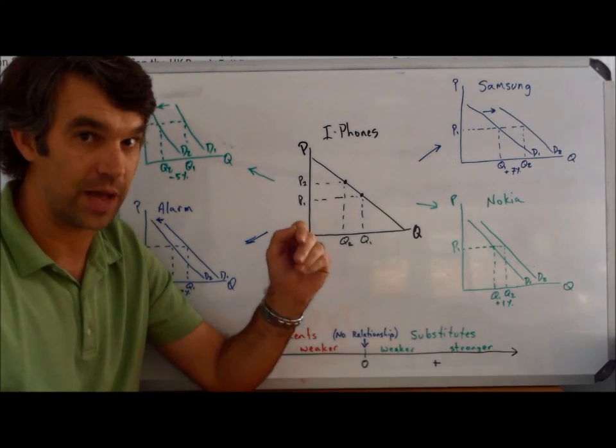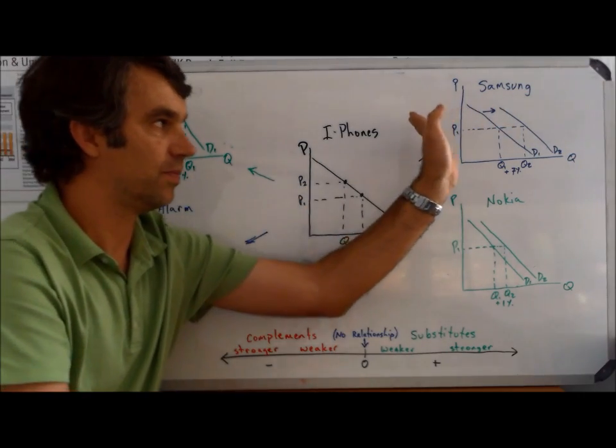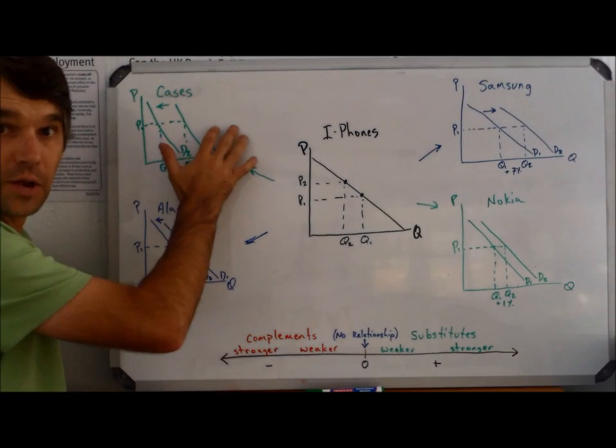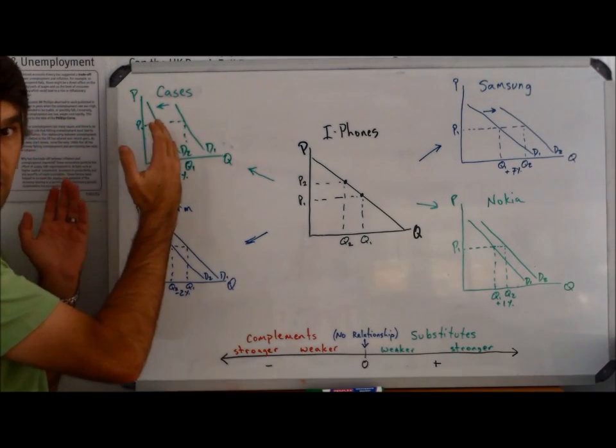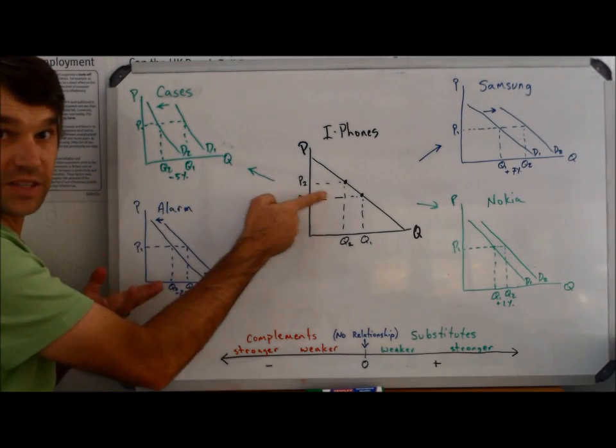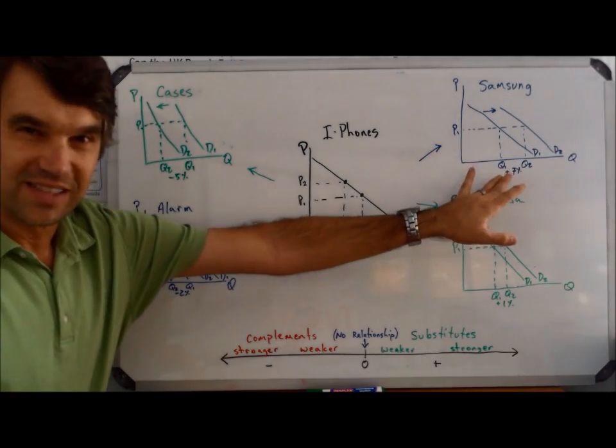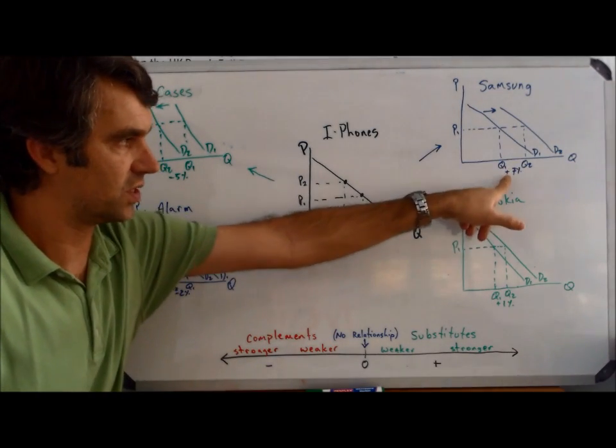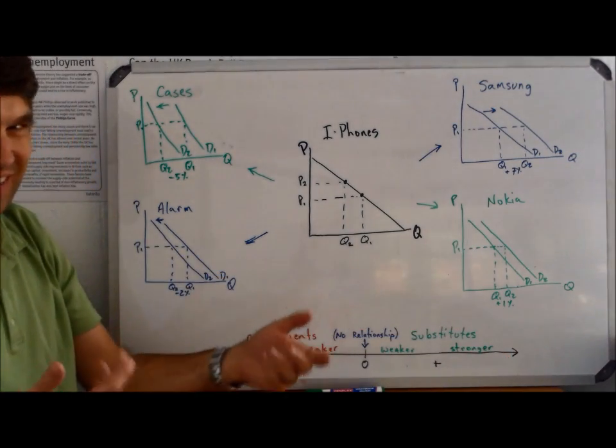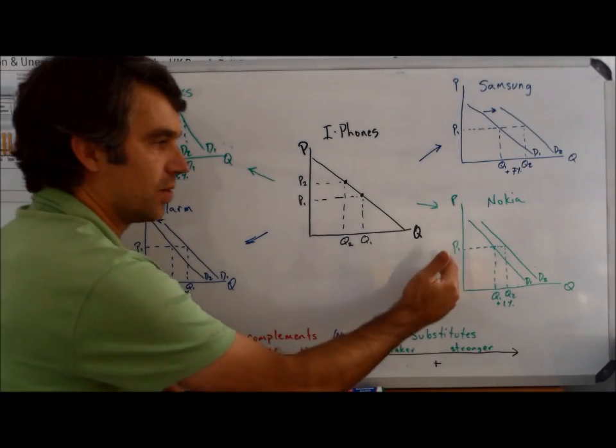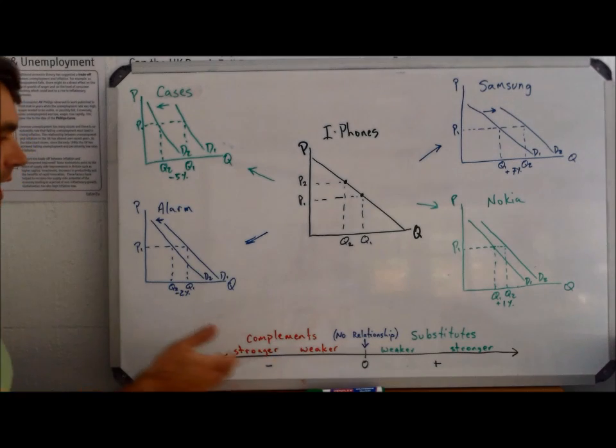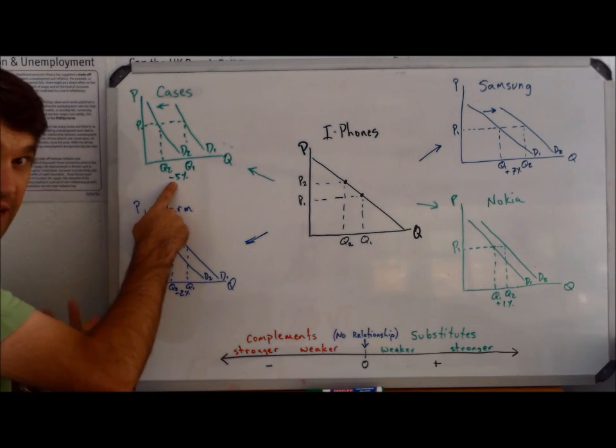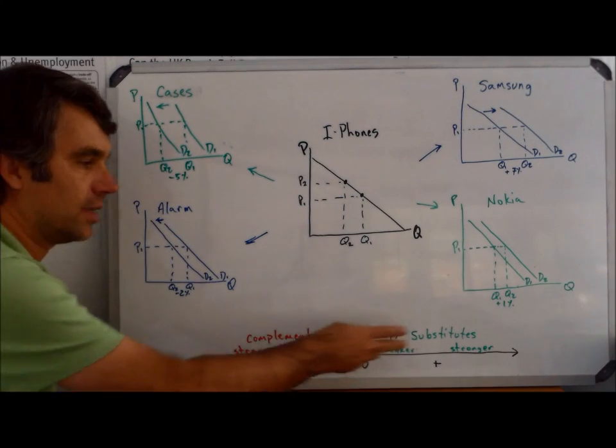Remember when we talked about shifting the demand curve? It shifts because of a change to a non-price determinant of demand. Remember one of those was the price of another product. For Samsung, their demand has increased because of a change to the price of a different product. Likewise, this product's demand has shifted to the left, decreased because of the price of a different product. We see these two shifting to the right by 7 and 1%, and these two shifting to the left by negative 5% and negative 2%.